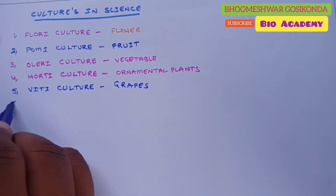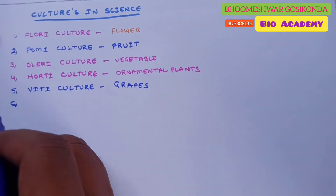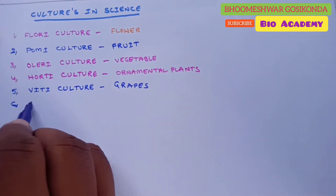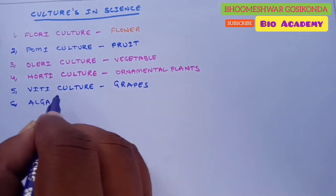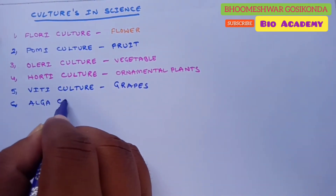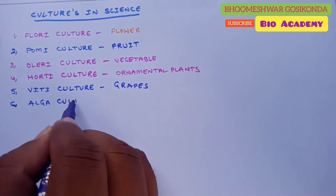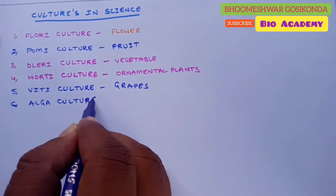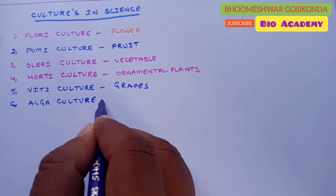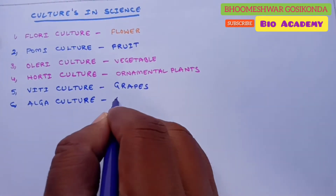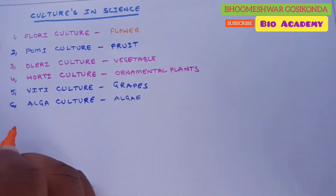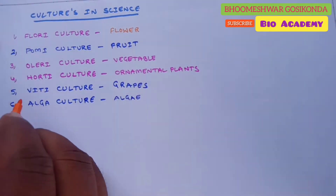The next one is algaculture. Algaculture is a form of aquaculture involving the farming of species of algae.